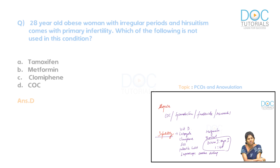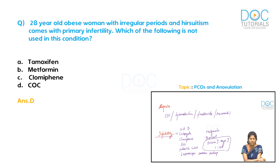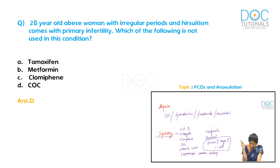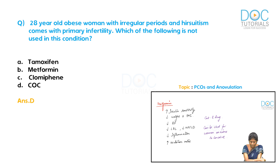The drugs used in PCOS for infertility are: letrozole, clomiphene, FSH, and pulsatile GnRH. Additional drugs include metformin, inositol, laparoscopic ovarian drilling, and vitamin D.